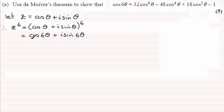Now because cos 6θ is the real part of this expression, all I need to do is expand this bracket and just compare the real parts. So therefore cos 6θ is going to be identical to the real part of the expansion of this.